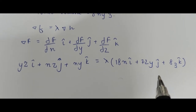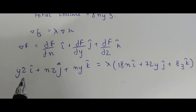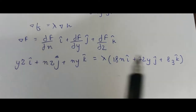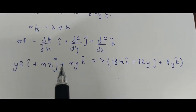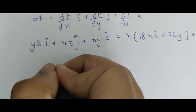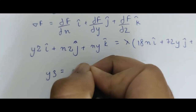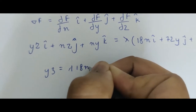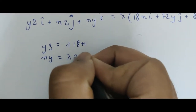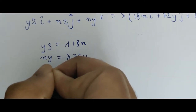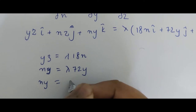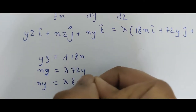The left side equals the right side, so matching coefficients: for î, yz = 18x·lambda; for ĵ, xz = 72y·lambda; and for k̂, xy = 8z·lambda.